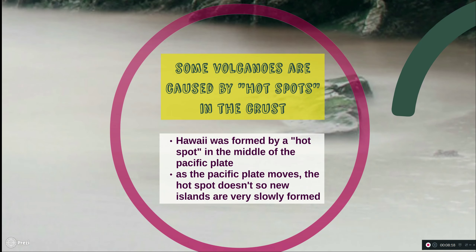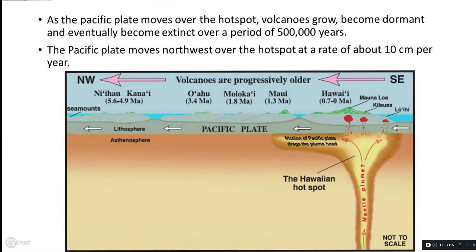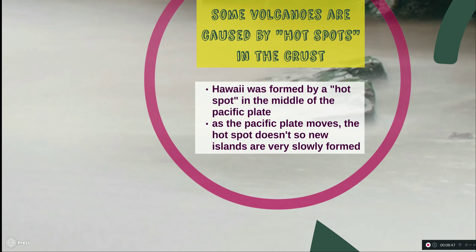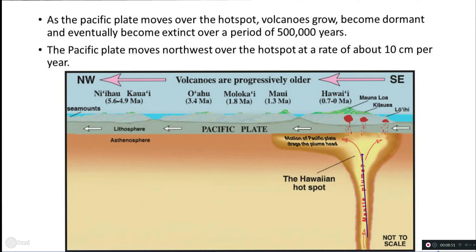Some volcanoes are caused by hot spots in the crust — a hot spot is a weak spot where molten material from the core is able to push up through the crust and distribute magma to the surface. Hawaii is actually a hot spot. You can see Hawaii in the middle of the Pacific plate with no plate boundaries nearby. The hot spot does not move, but as the Pacific plate moves, new islands are continuously formed because magma keeps rising to the surface, building new land.